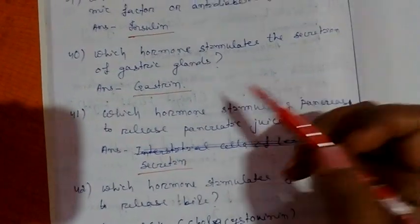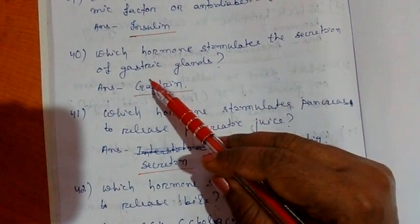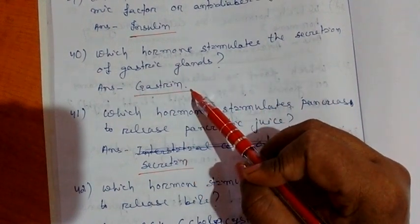Now come to question number 40. Which hormone stimulates the secretion of gastric gland? Answer is gastrin.